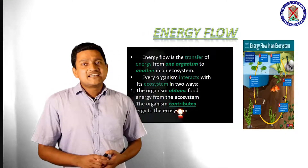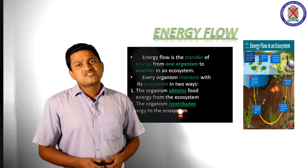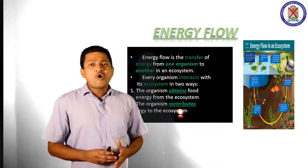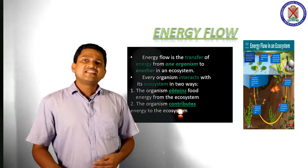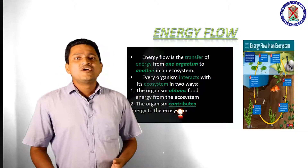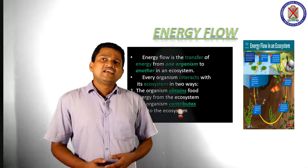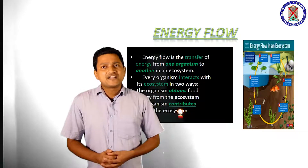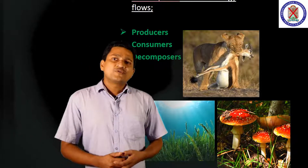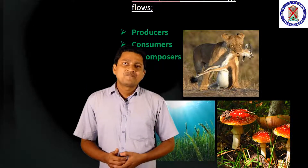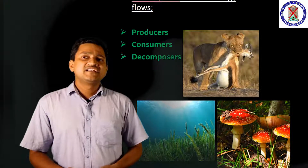Every organism interacts with its ecosystem in two ways. First, the organism obtains food energy from the ecosystem. And second, the organism contributes energy to the ecosystem. There are mainly three pathways in energy flow: producers, consumers and decomposers.